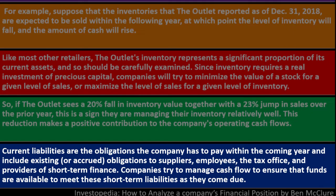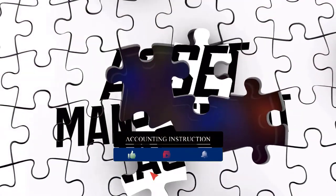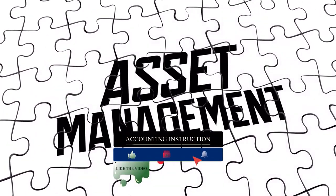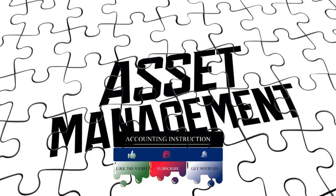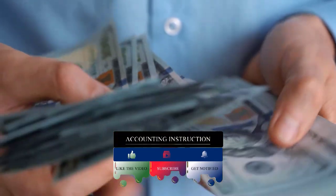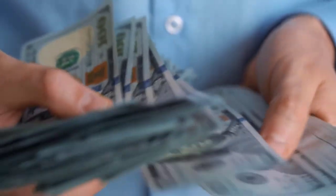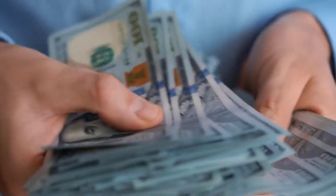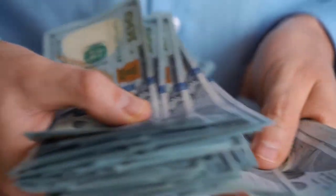Current liabilities are the obligations the company has to pay within the coming year, including accrued obligations to suppliers, employees, the tax office, and providers of short-term finance. Companies try to manage cash flow to ensure funds are available to meet these short-term liabilities as they come due. You don't want too much cash sitting idle, but you also don't want too little to meet your current obligations.